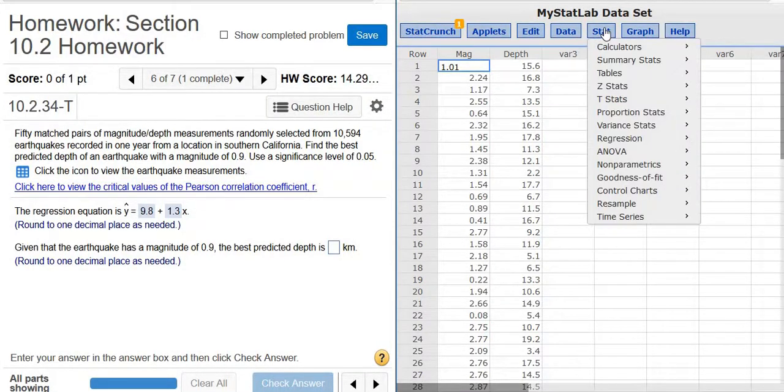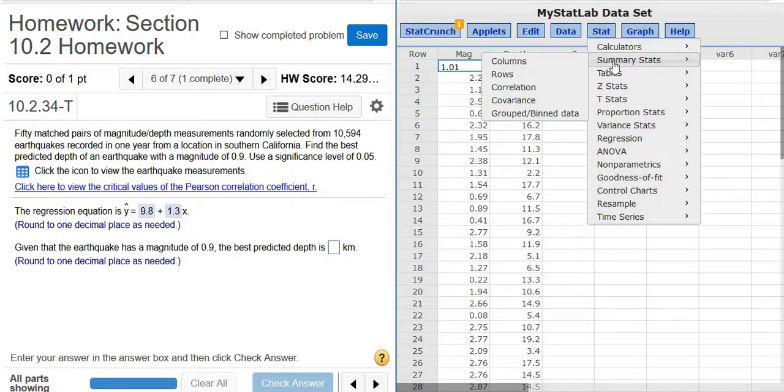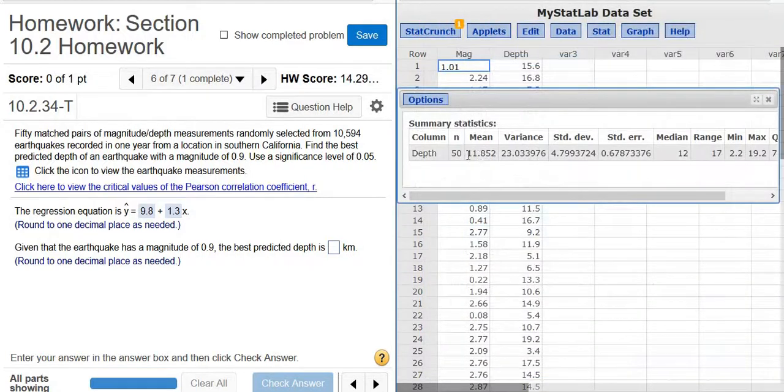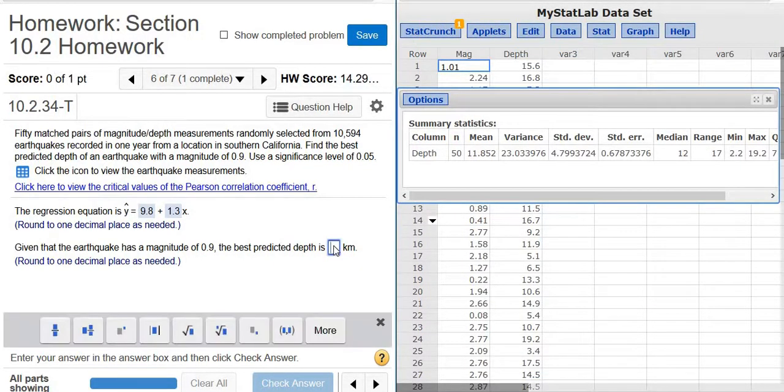So you go to Stat, summary stats, columns, okay? Stat, summary stats, columns, you pick the depth, you pick the second thing, click compute, and there's the answer, so it'd be 11.8.